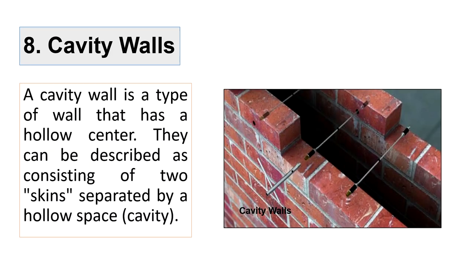The eighth type is cavity walls. A cavity wall is a two-layered wall where the two layers are separated by a hollow space called a cavity. Since air is a poor conductor of heat, these walls are made when heat insulation is required in a building. As you can see, metal ties are used to keep the two wall layers together.